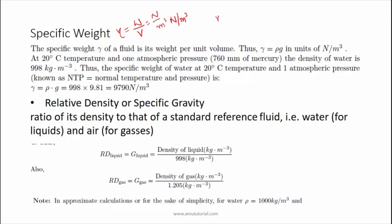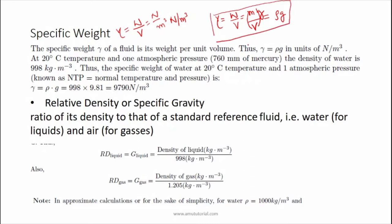Now weight is equal to mg, and weight divided by volume gives us the formula. Mass upon volume gives you density, so gamma is equal to rho times g, where g is the acceleration due to gravity.